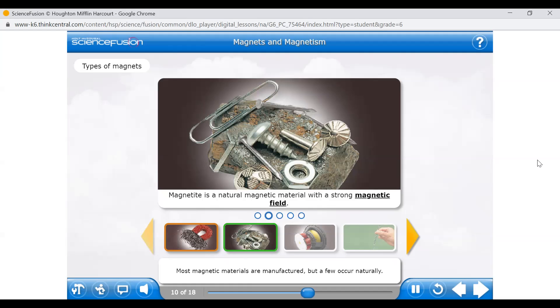Most magnetic materials are manufactured, but a few occur naturally. The most common of these is the iron compound called magnetite or lodestone. As molten magnetite cools, the domains line up with each other, giving the solid a strong magnetic field. Magnetite's ability to attract iron was known in both Greece and India over 2,500 years ago.